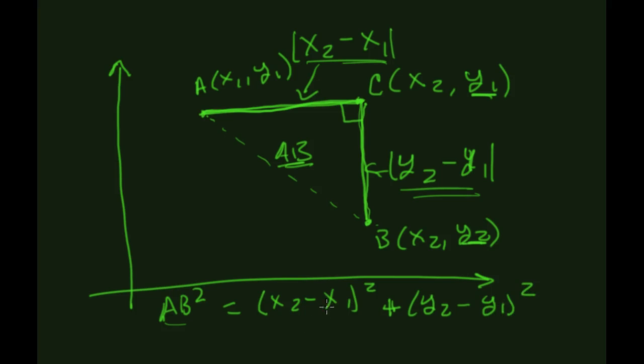So this is going to give me y2 minus y1 squared. So a squared plus b squared is equal to c squared. But I don't want AB squared. I want AB. So I just take the square root of both sides. And lo and behold, I get my distance formula: the square root of x2 minus x1 squared plus y2 minus y1 squared, all of it square rooted. So this is how our distance formula plays out, and this is why it exists.